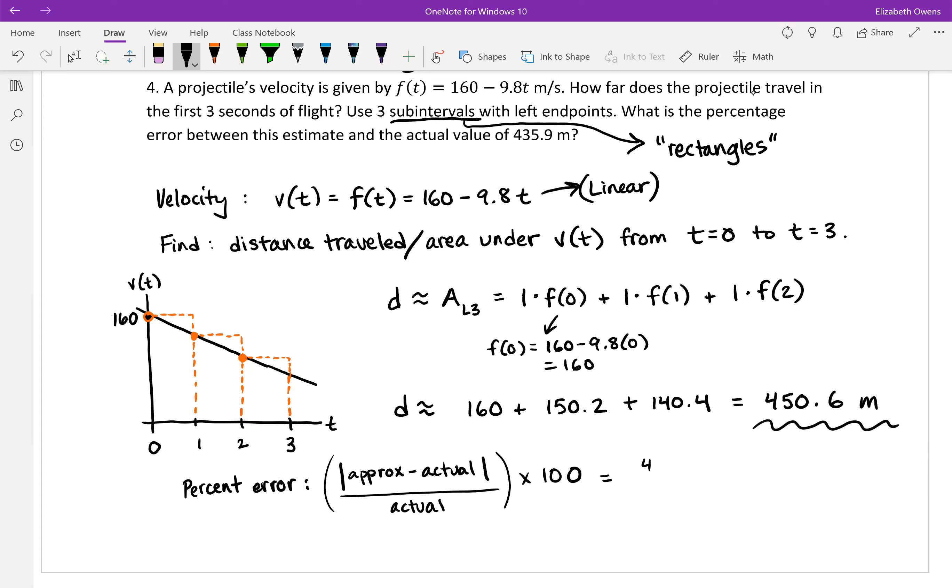So let's take our approximation 450.6 minus the actual 435.9. Okay. Absolute value, even though it's going to turn out positive. That's just how the formula looks. Okay. Divide by the actual value, 435.9. Multiply by 100. And we should get about 3.37. And so that's telling us that this is about a 3.37% error, which in the grand scheme of things is not too shabby. It's less than 5% error, and we only used three rectangles.